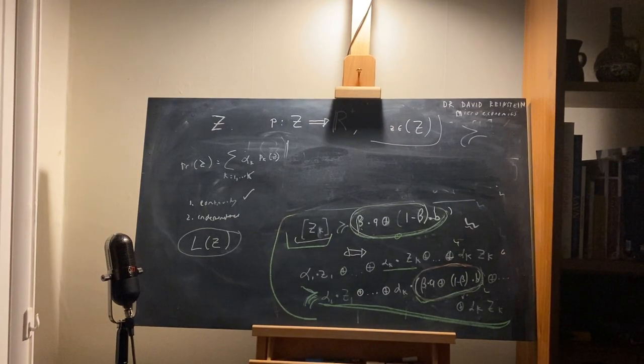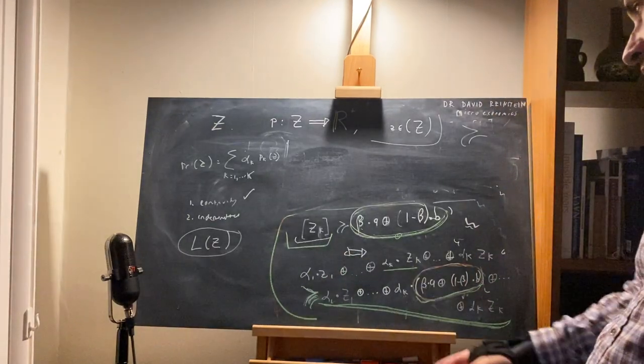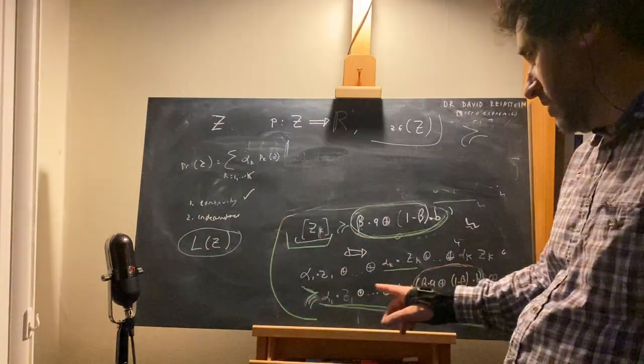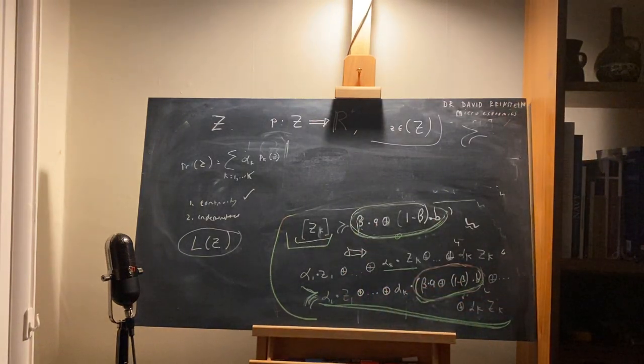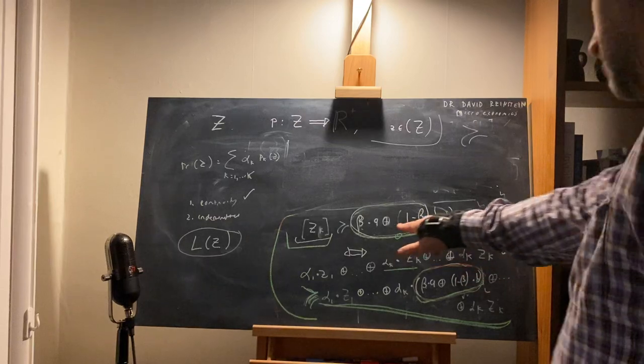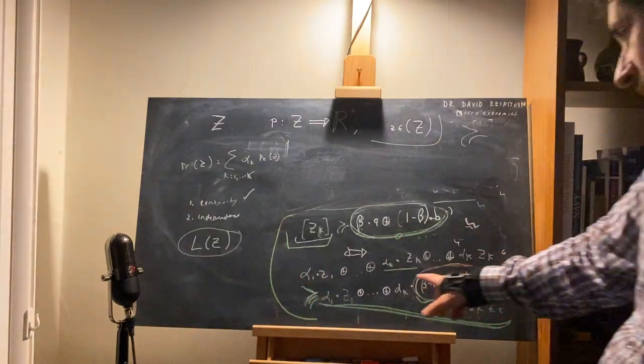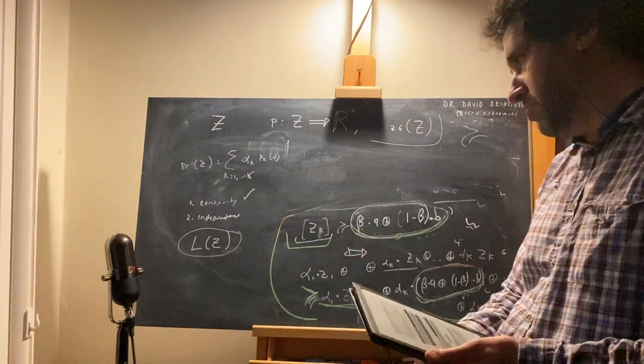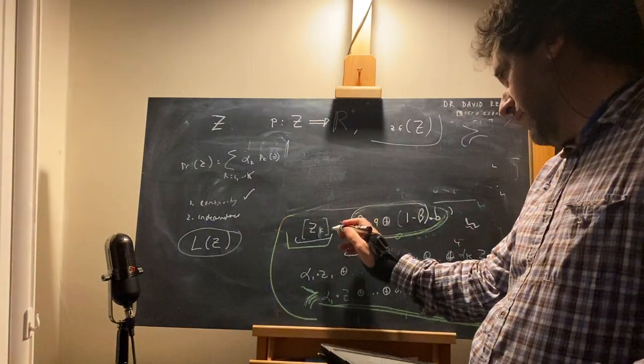We had this definition that implied that when I swapped in a worse element for one element of a lottery, and that thing that I swapped in was itself a lottery, then basically I made the lottery worse. Now of course I expressed this with respect to weak preferences, but I believe we can show that the results we have implied